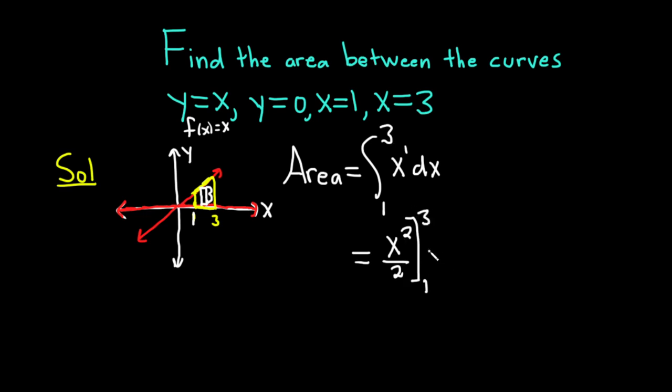Then you plug in the top number first. This will be 3 squared over 2. You subtract, and then you plug in the bottom number, so 1 squared over 2. 3 squared is 9, so we have 9 over 2, minus 1 squared is 1, so 1 over 2. We end up with 8 over 2, which is equal to 4.